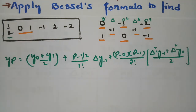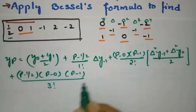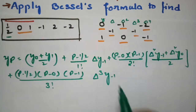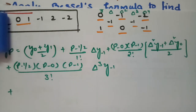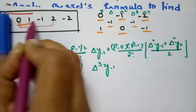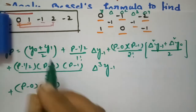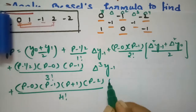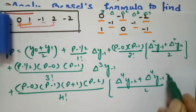Continuing Bessel's formula: the next term is [(p − 1/2) × p × (p−1)]/3! × Δ³y₋₁, taking the single third-difference value. Then the fourth-order term is [p(p+1)(p−1)(p−2)]/4! × (Δ⁴y₋₂ + Δ⁴y₋₁)/2, plus and so on.